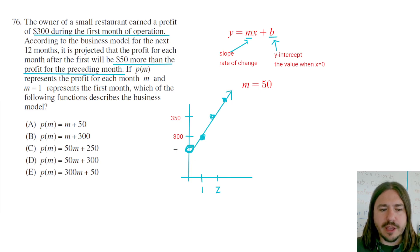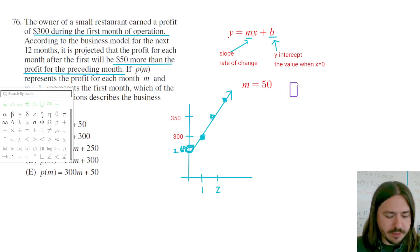$250 is going to be our y-intercept here. I should have just typed it, right? Anyway, our b is going to be $250, and now we can write our equation.